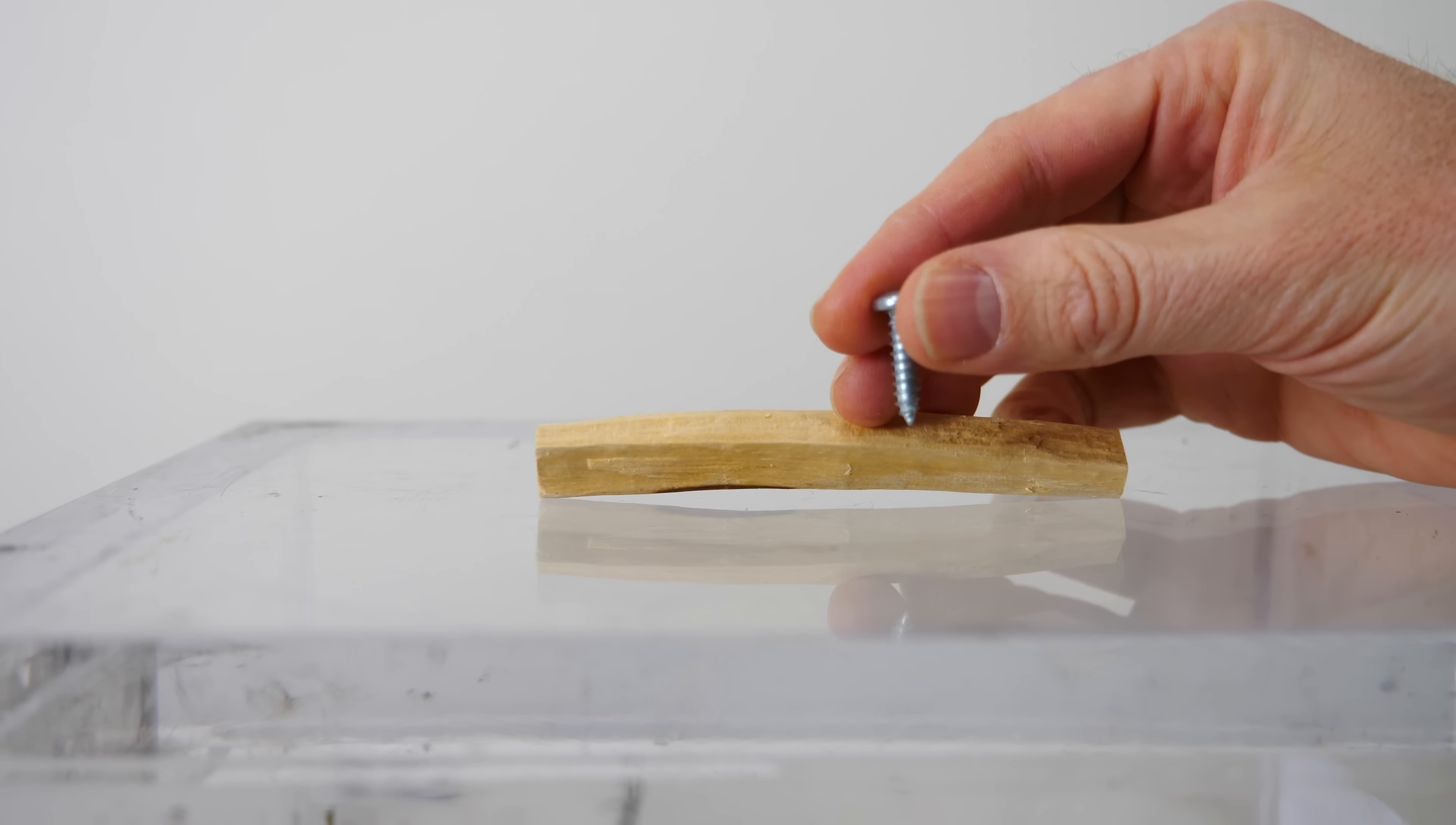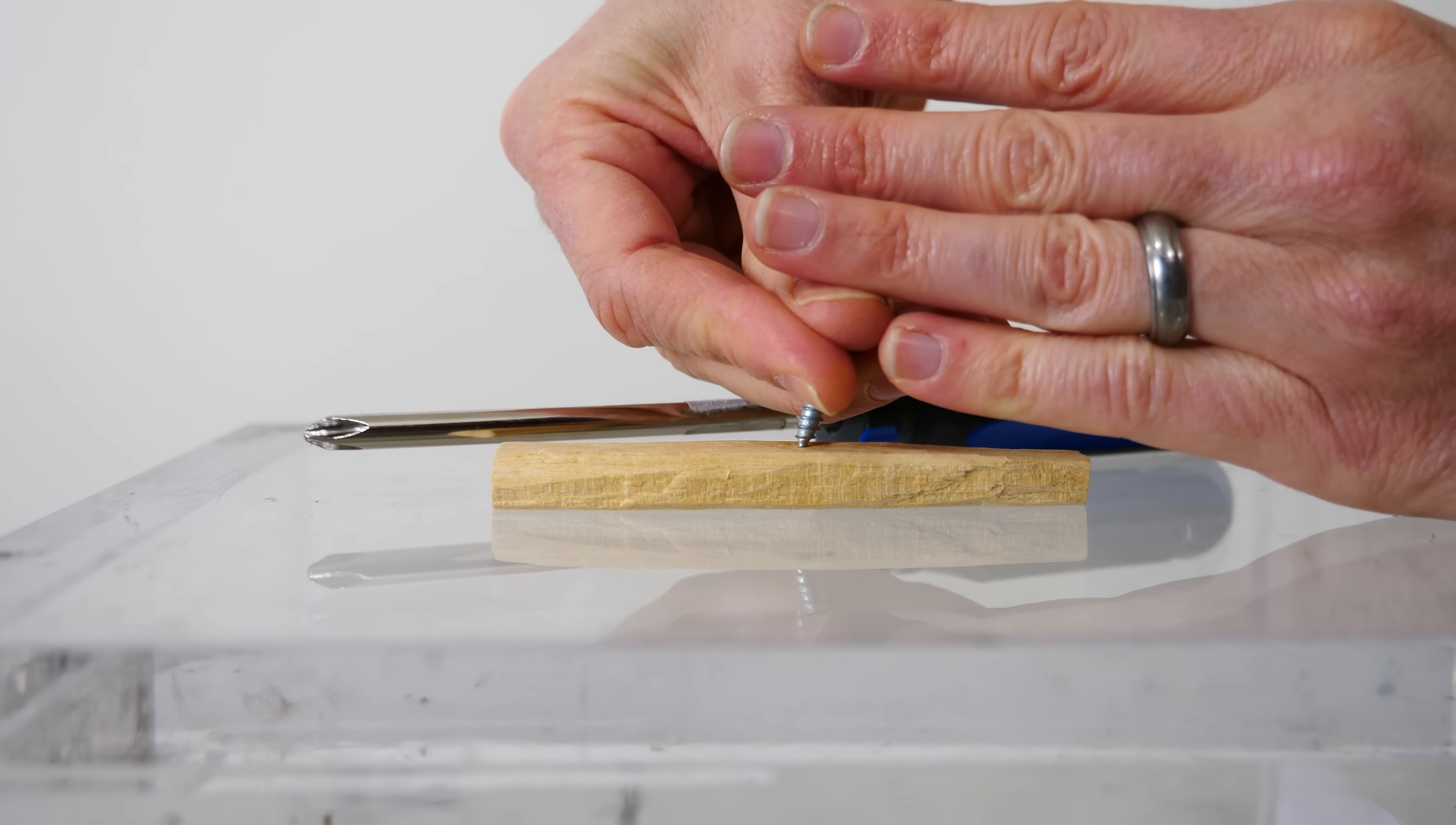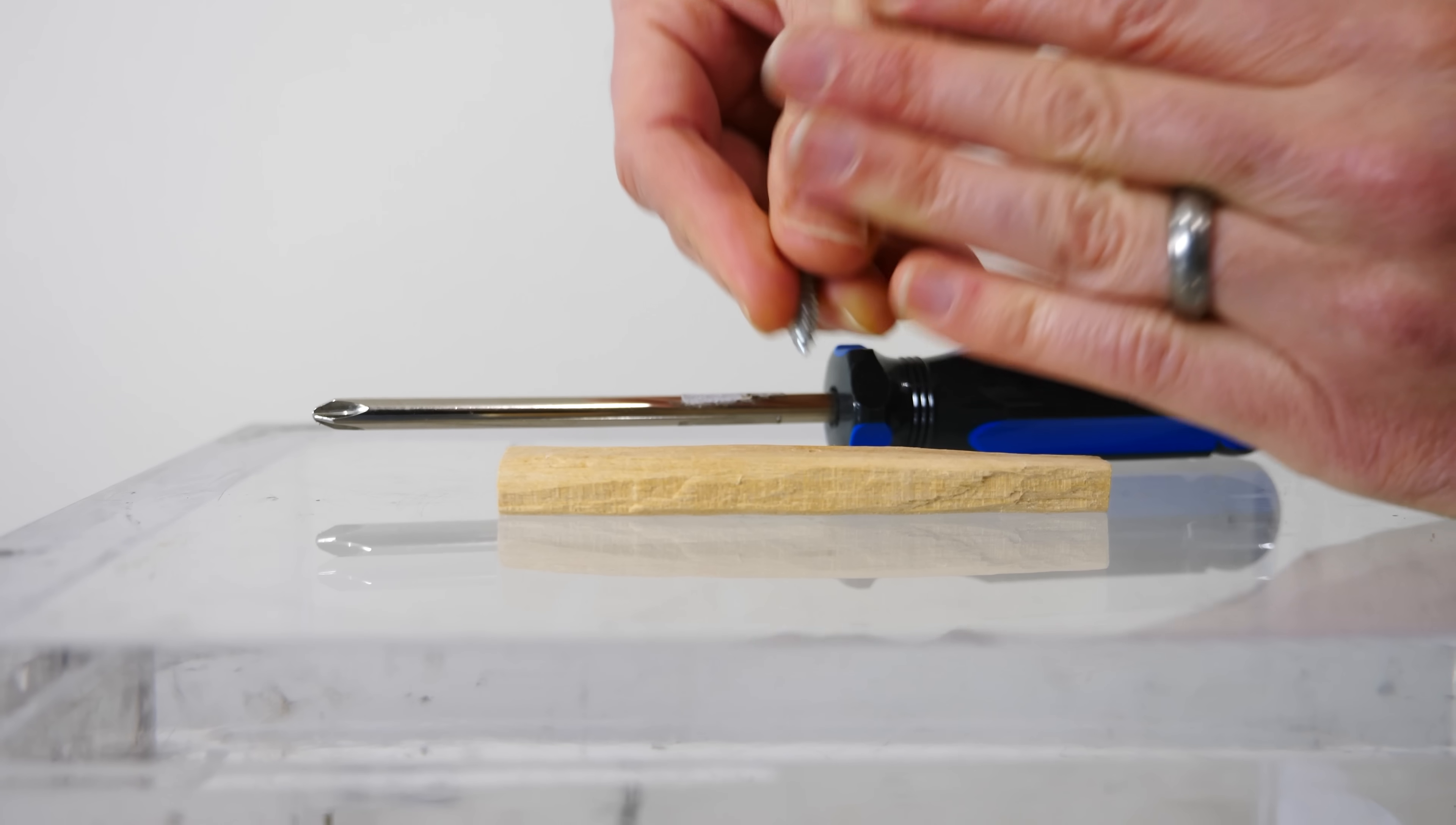But that's not all that these simple machines can do. The coolest thing about them is that like the other simple machines, they amplify the force that you put on them. For example, have you ever wondered why if I take a screw like this and I just try to push on it, I can't push it into this wood at all as hard as I push. Barely goes in.